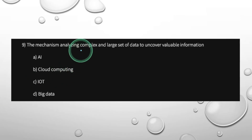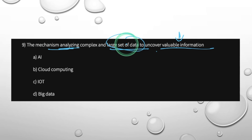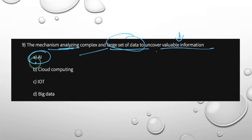The mechanism of analyzing complex and large sets of data to uncover valuable information. Large set of data, analyze, to uncover valuable information — meaning you can interpret the data to reach a conclusion. AI is artificial intelligence — it is a separate science, a machine intelligence.